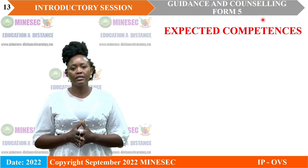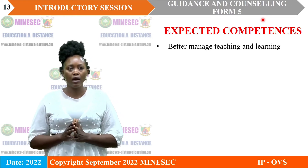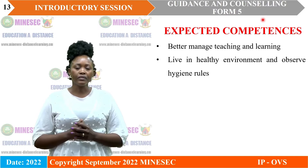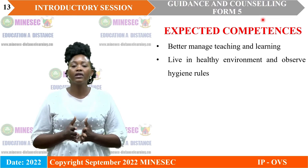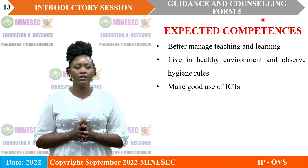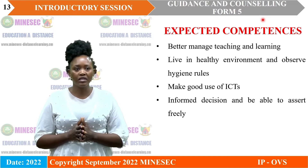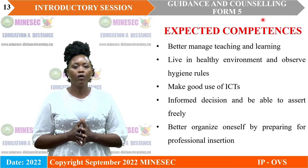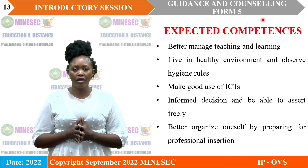What are the expected competencies after following this program for orientation? The first competence is that students should be able to manage teaching and learning, that is, adapt in the school environment. Second, students are expected to be able to live in a healthy environment and observe hygiene rules — that is why we talk of clean school and green school concepts. Thirdly, students will understand the consequences of not using ICT tools properly. Fourthly, students are expected to make informed decisions and assert themselves freely. The fifth expected competence is that students should be able to organize themselves better to prepare for exams appropriately.